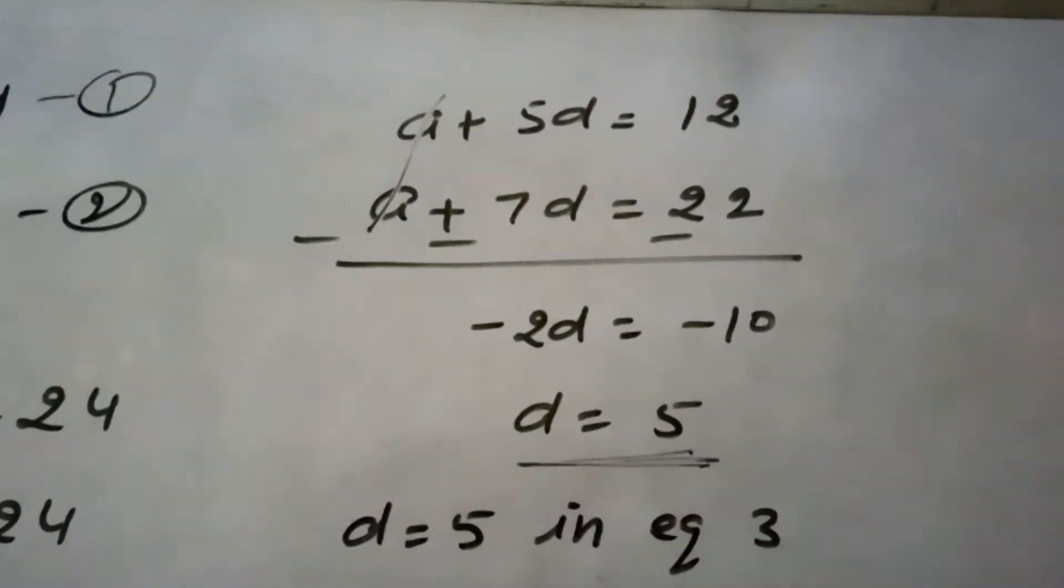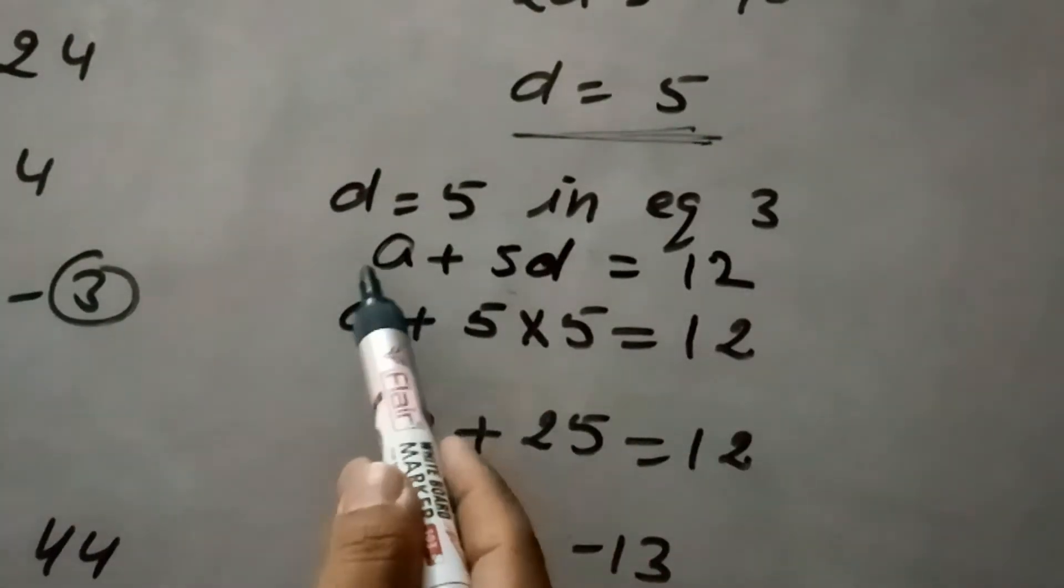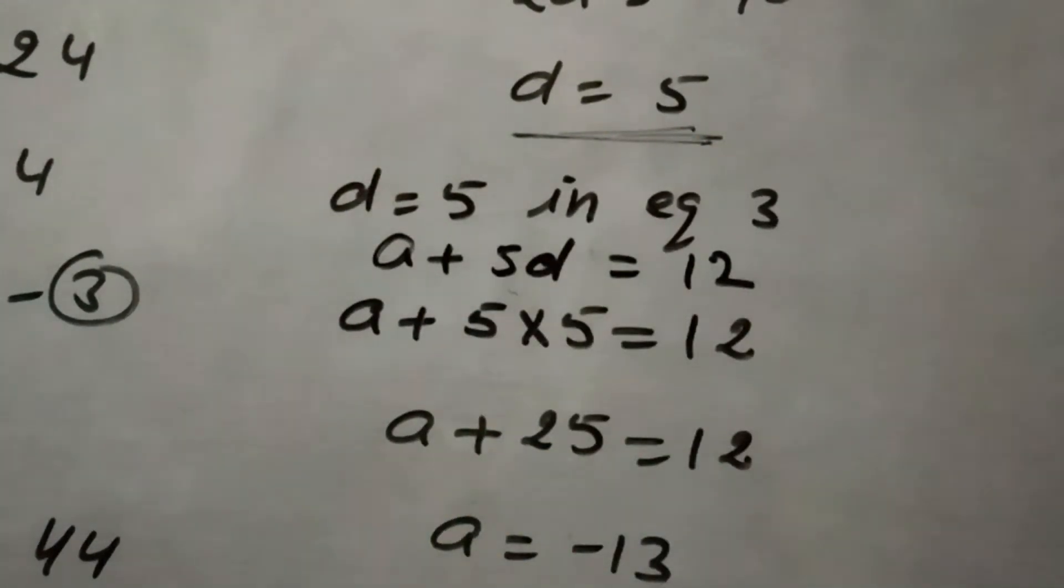Now we will put this value of D in either 3 or 4. So I am putting here in equation 3. Equation 3 is A plus 5D equals 12. So A plus 5 times 5, because D is 5, equals 12. So A is minus 13.